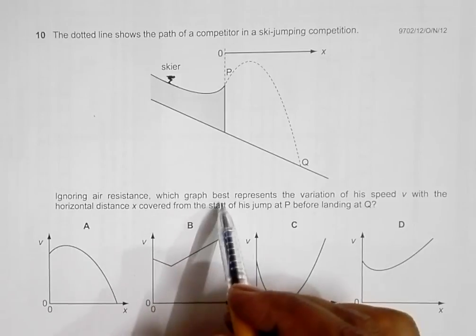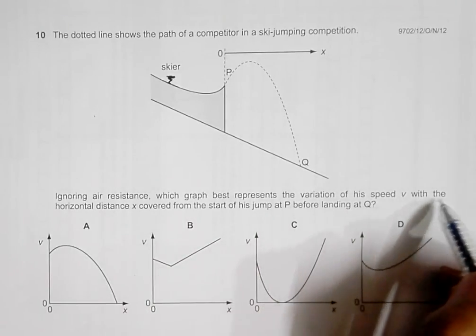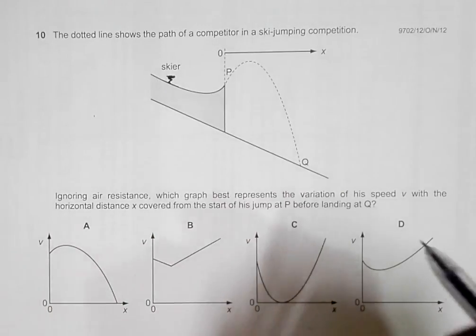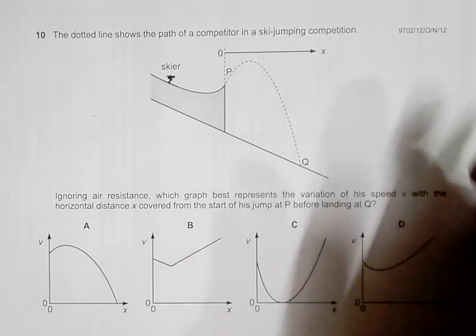Ignoring air resistance, which graph best represents the variation of his speed V with the horizontal distance X covered from the start of his jump at P before landing at Q? So we have to have a graph of velocity along with this X.